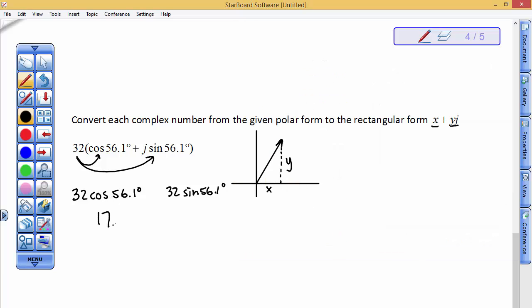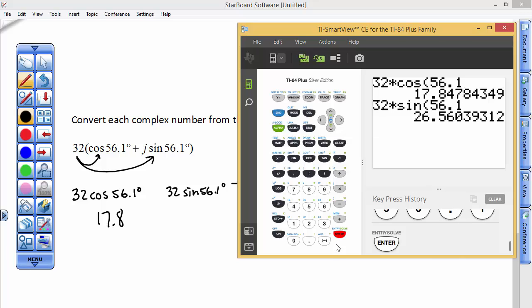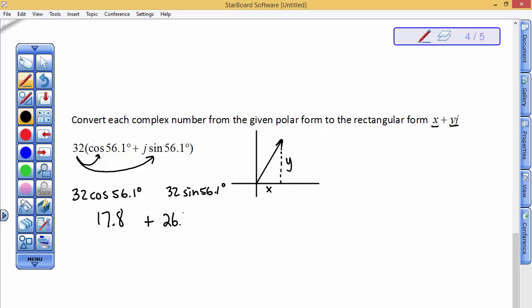And then the next one is 32 times the sine of 56.1. And that one's a positive 26.6, I think I'll call that. 26.6. There's a j here. Remember, there was a j here.